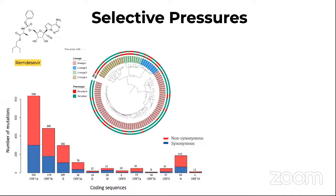Let's think about the selective pressures this virus is undergoing. Looking at a published chart of different genes on the genome and their synonymous and non-synonymous mutations, ORF1A has the majority of these mutations. The first type of selective pressure we know of is remdesivir — an antiviral drug that interferes with the RNA-dependent RNA polymerase (RDRP). These antivirals are intended to stop the ability of the virus to replicate, but at the same time can have a negative effect because the RDRP can mutate to evade this pressure, developing resistance to the antiviral.